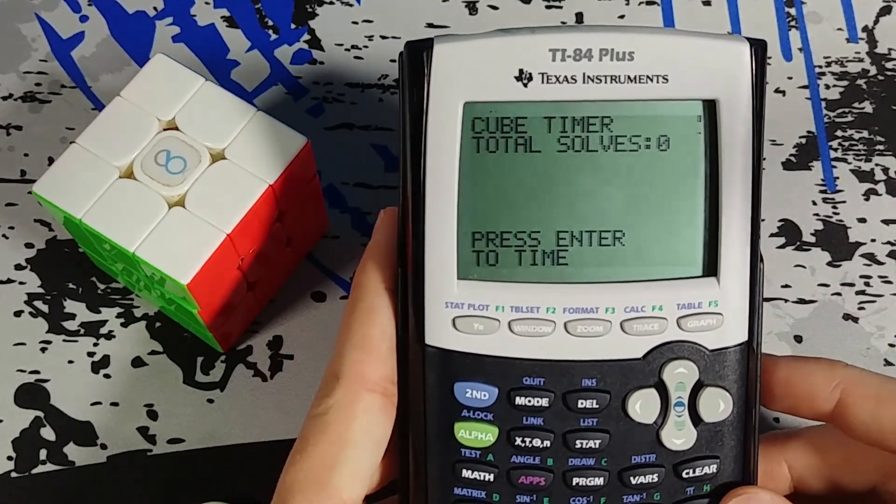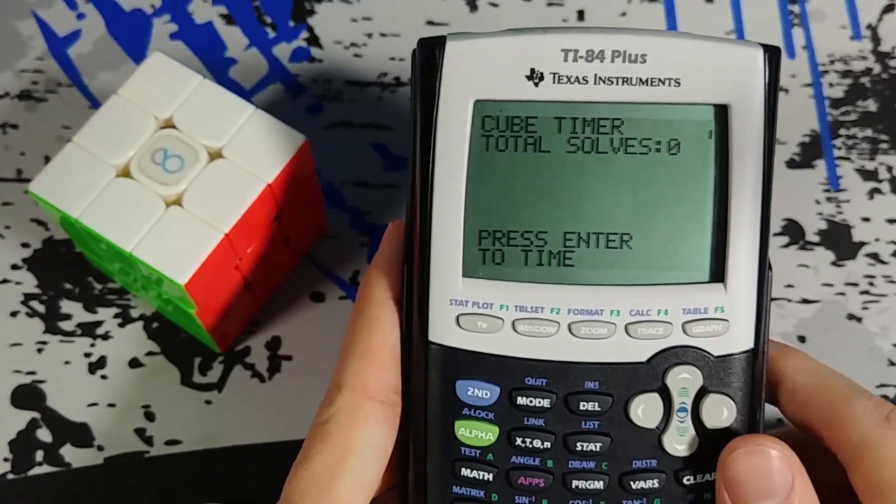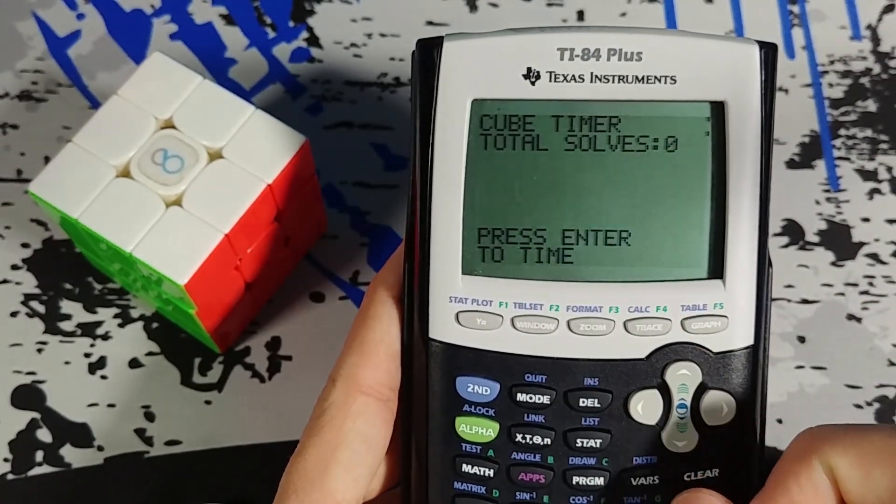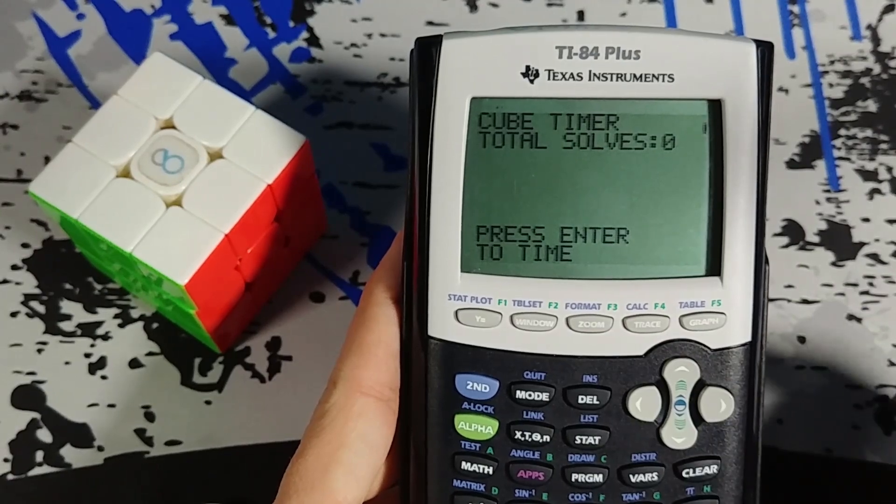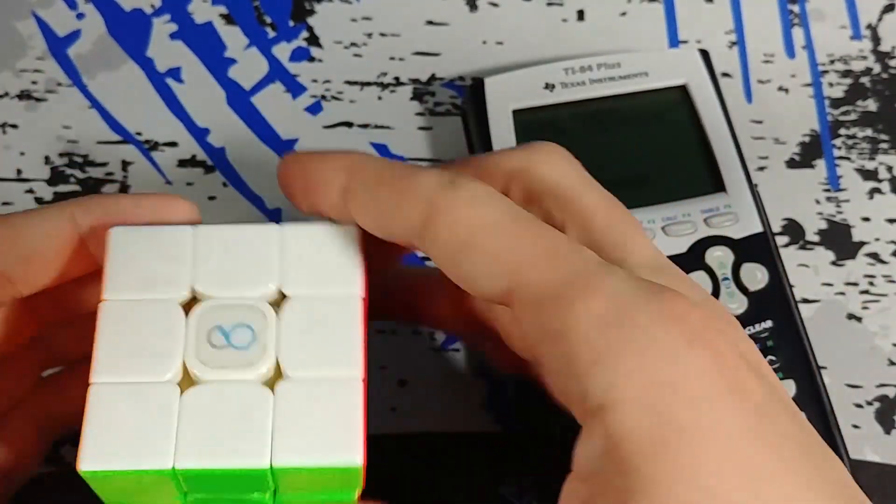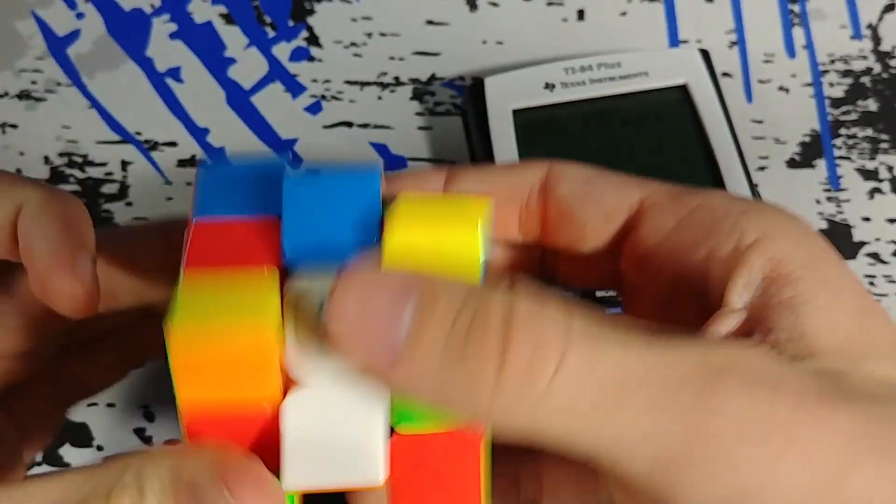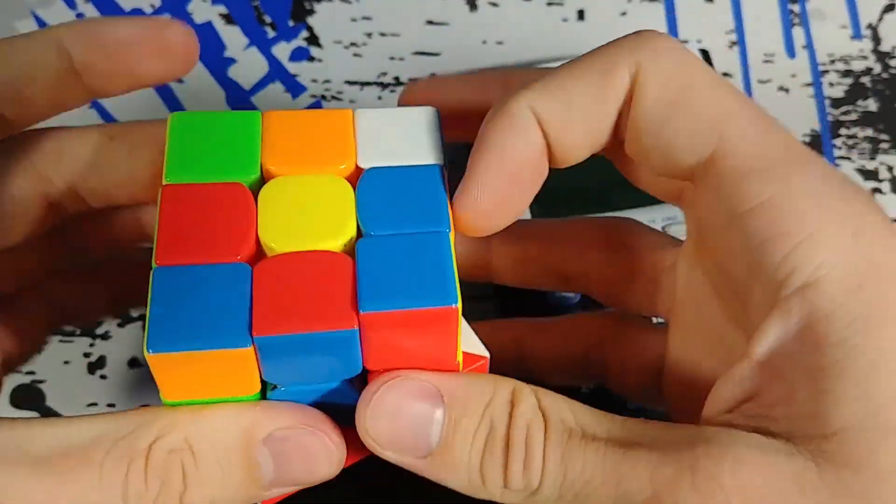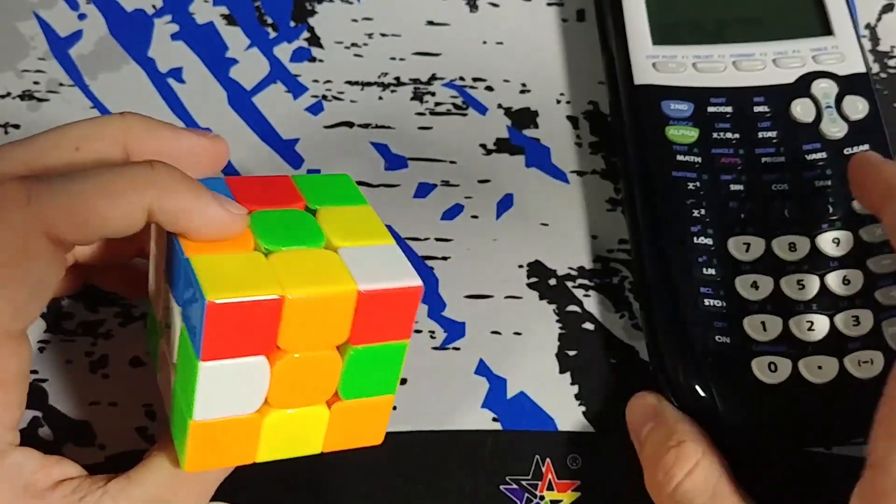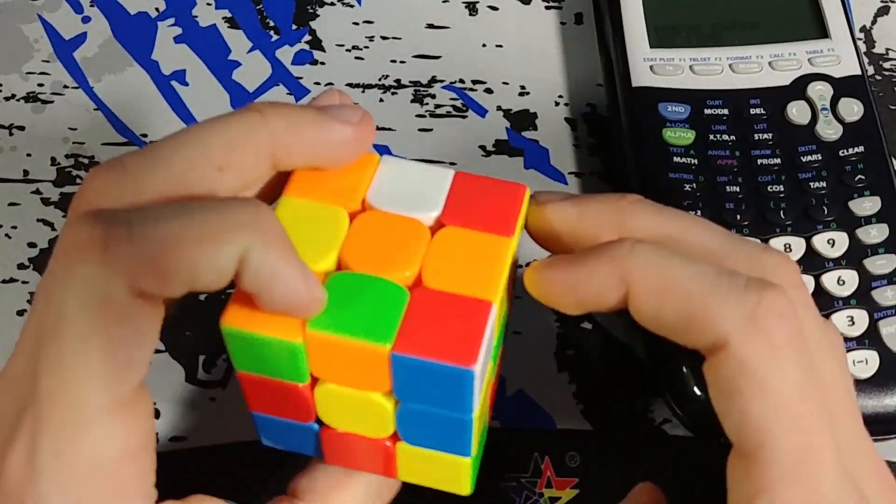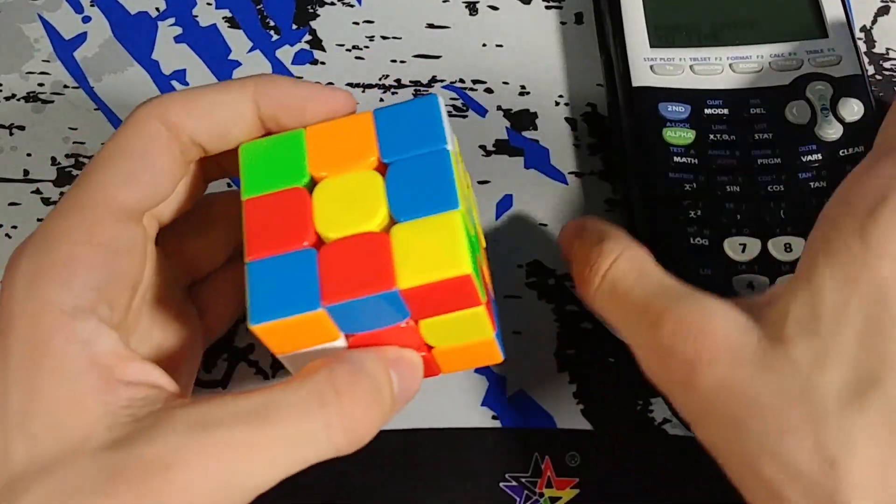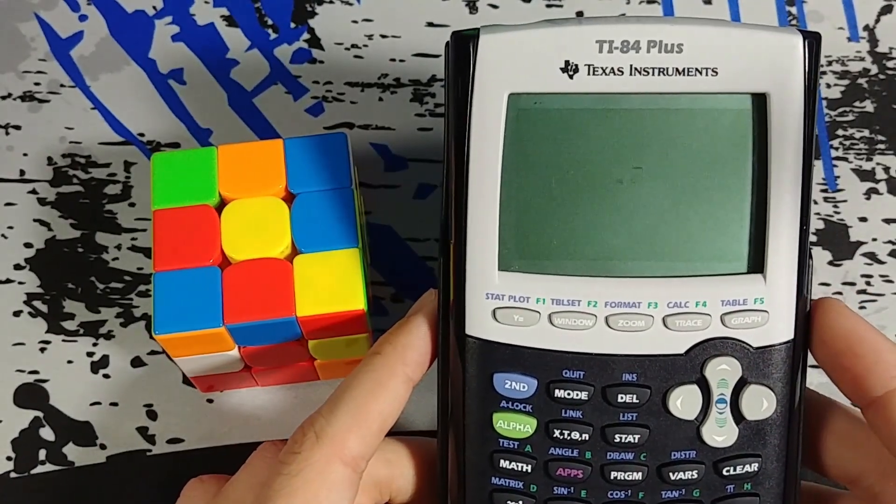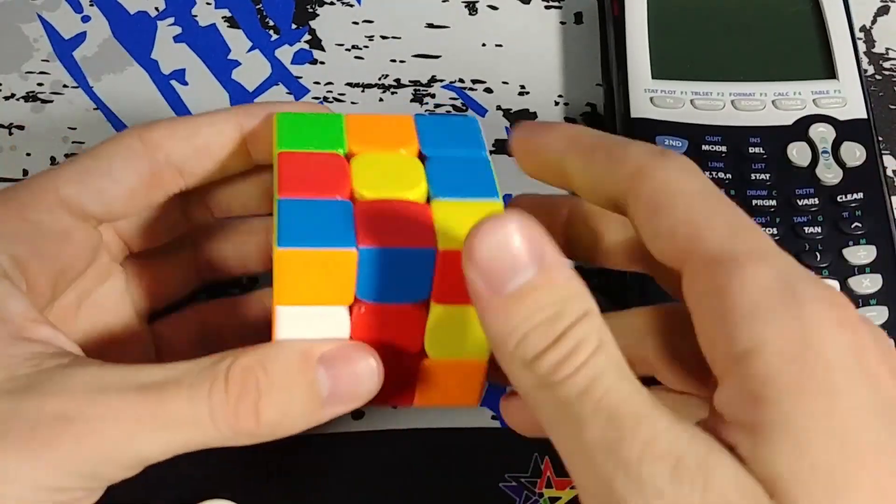So here's the actual interface of the program. It's got the title up top, cube timer. It tells me my total number of solves is at zero. And then it says press enter to time. So it does not have a scrambler but I can hand scramble. This isn't supposed to be like S tier cube timer, this is just if you have a calculator and nothing else. And then when I press enter the timer is going to start. So I can now solve my cube.